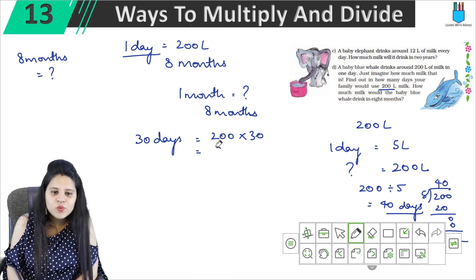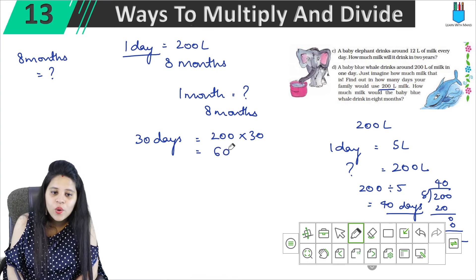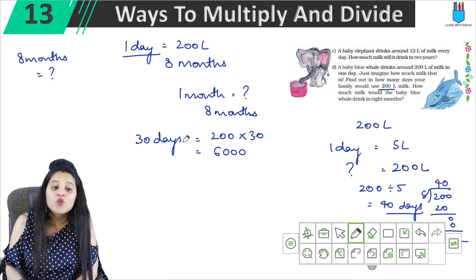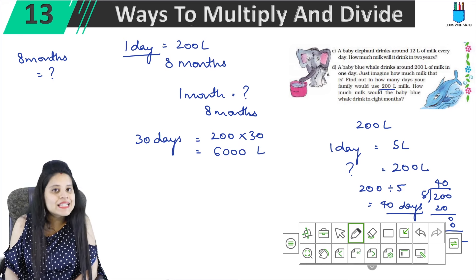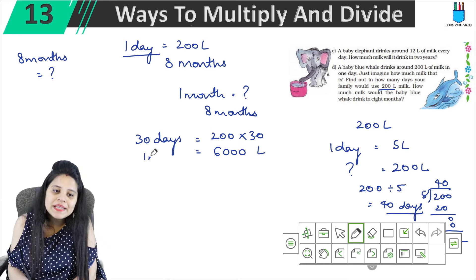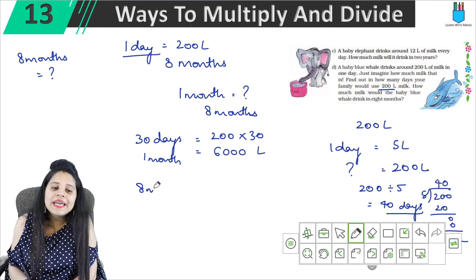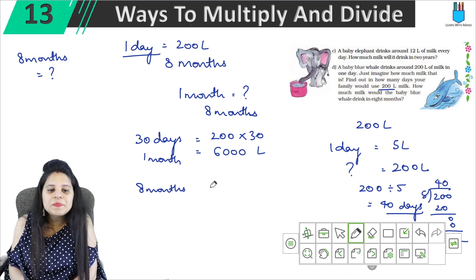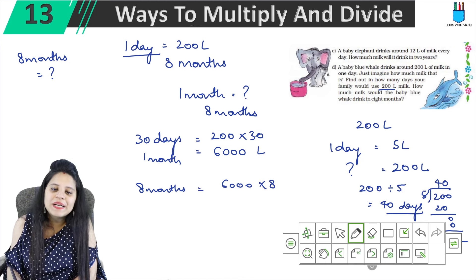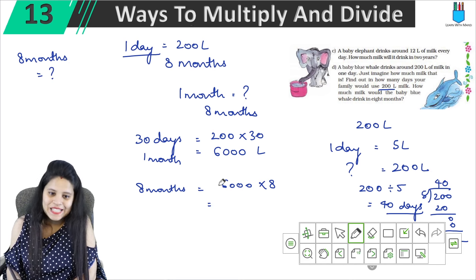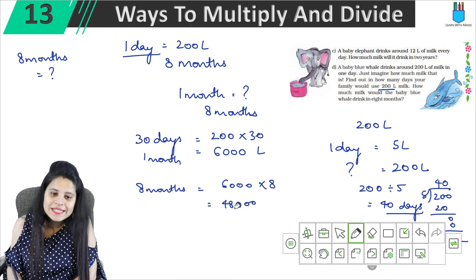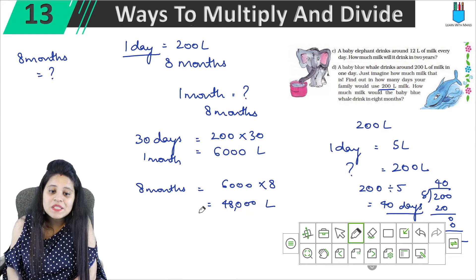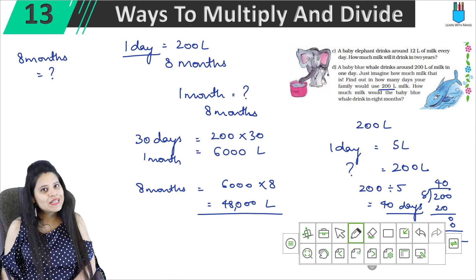200 into 30: 3 twos are 6, and there are 3 zeros, so that gives 6,000 liters in 1 month. Then for 8 months, we multiply 6,000 by 8: 6 into 8 is 48, and with the three zeros that gives 48,000. So in 8 months the baby blue whale will drink 48,000 liters of milk.